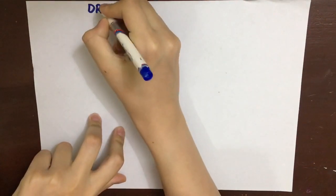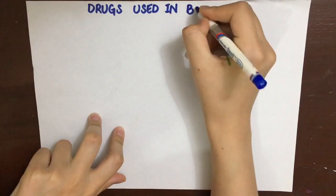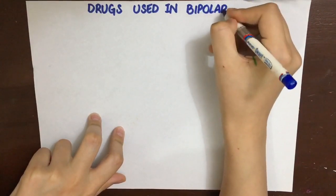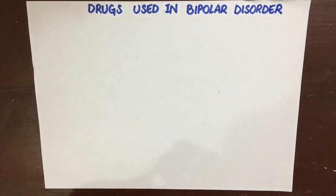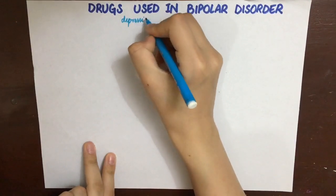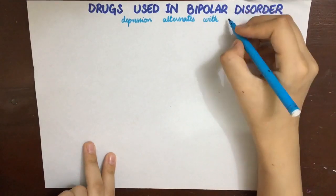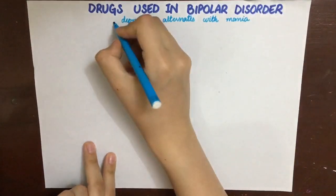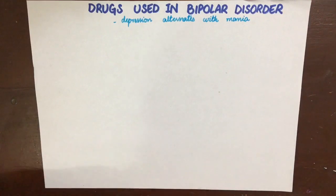Bipolar disorder, also formerly known as manic depression, is a mental health condition that causes extreme mood swings. It can include emotional highs — mania or hypomania — and lows, which is depression. The depression associated with bipolar disorder will cause the patient to become sad, hopeless, and lose interest in daily activities, while mania will cause a euphoric effect and can affect sleep, energy, activity, judgment, behavior, and the ability to think correctly.